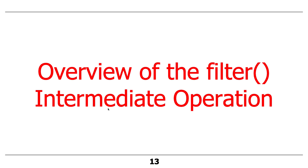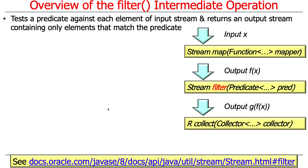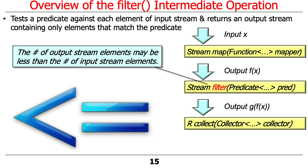The next intermediate operation is filter. Filter tests a predicate against each element of an input stream and returns an output stream containing only the elements that match the predicate. The most important difference between map and filter is that the number of elements in the output stream for filter could be less than the number of input elements if elements don't pass the filter. That's the whole point of filter.